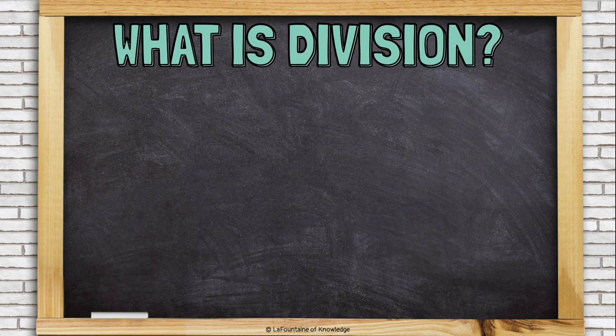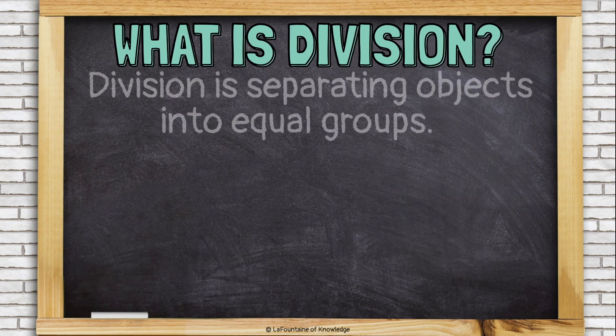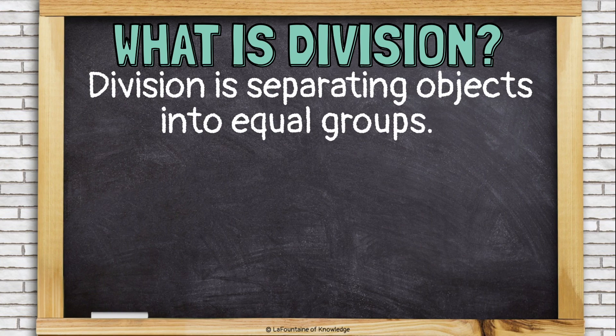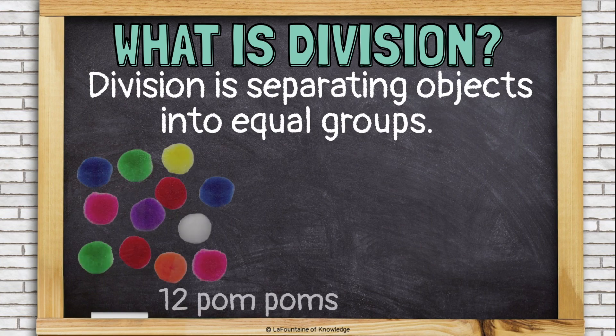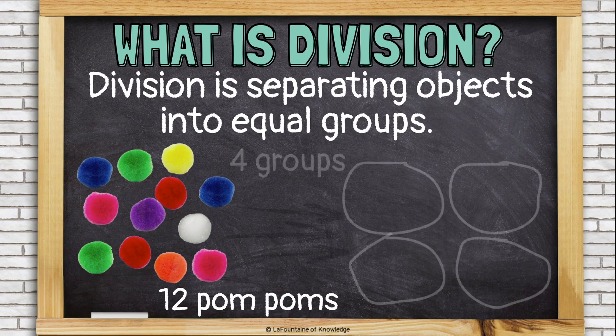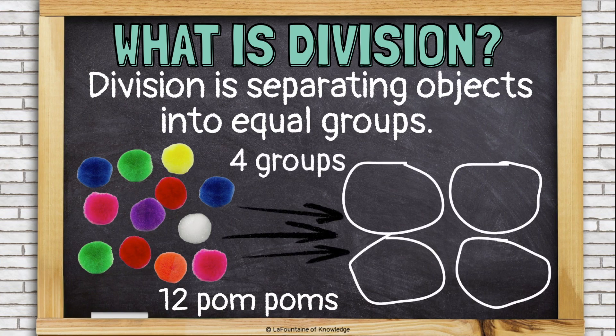So what's division? Division is separating objects into equal groups. This time, I'm starting with 12 pom-poms and I'm dividing them up into 4 groups. 12 divided by 4.